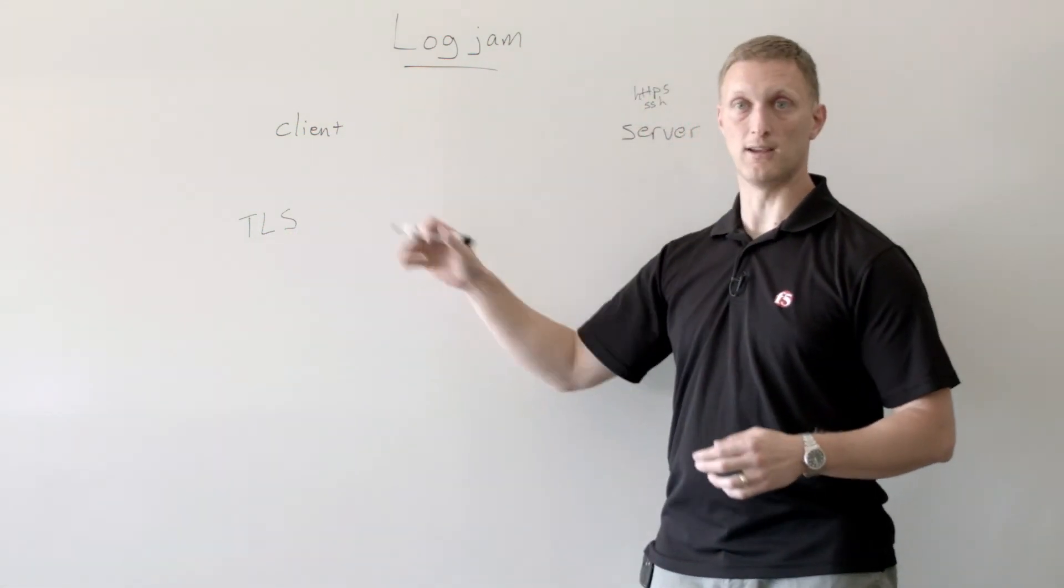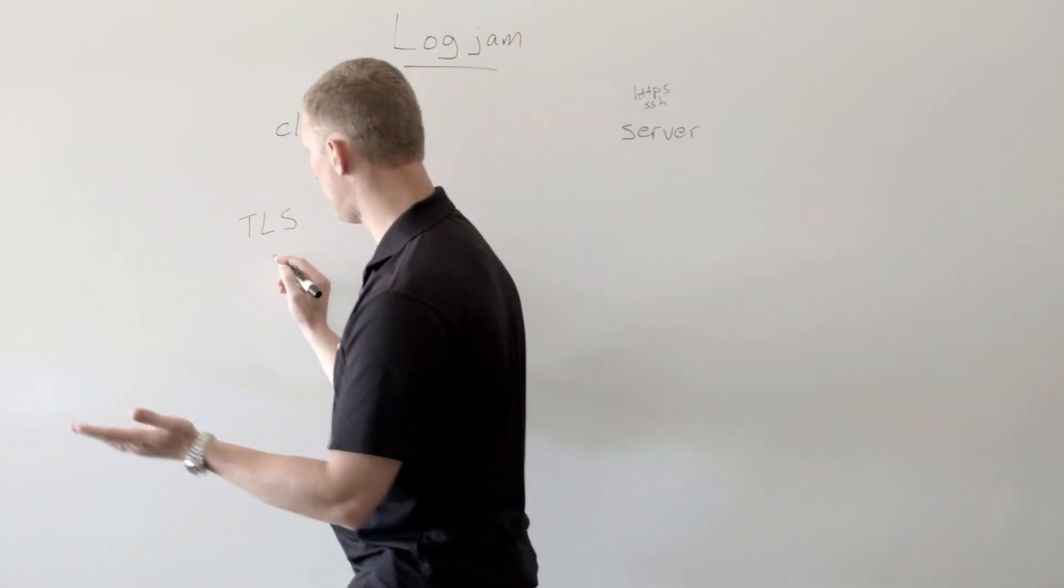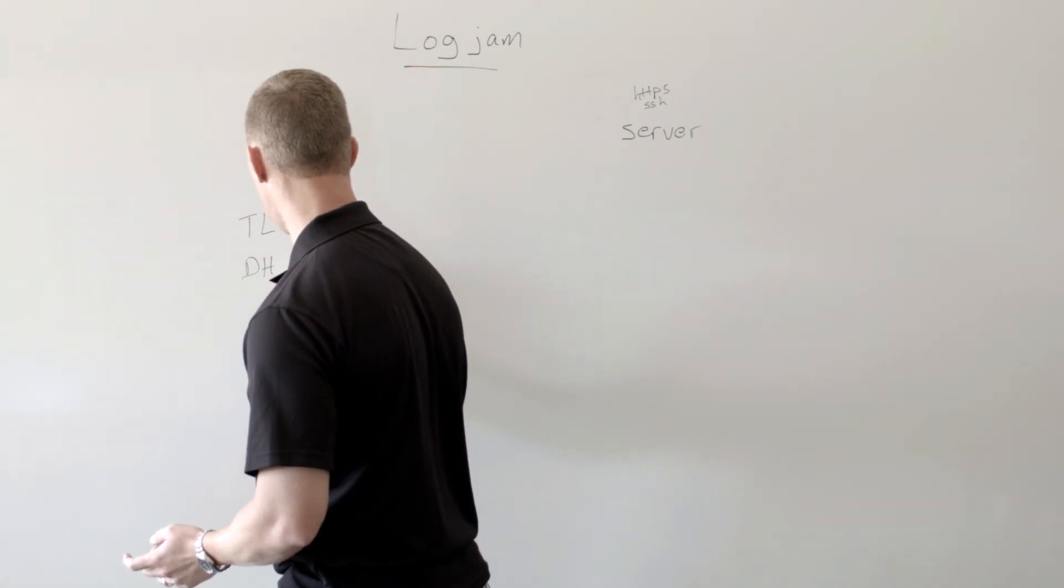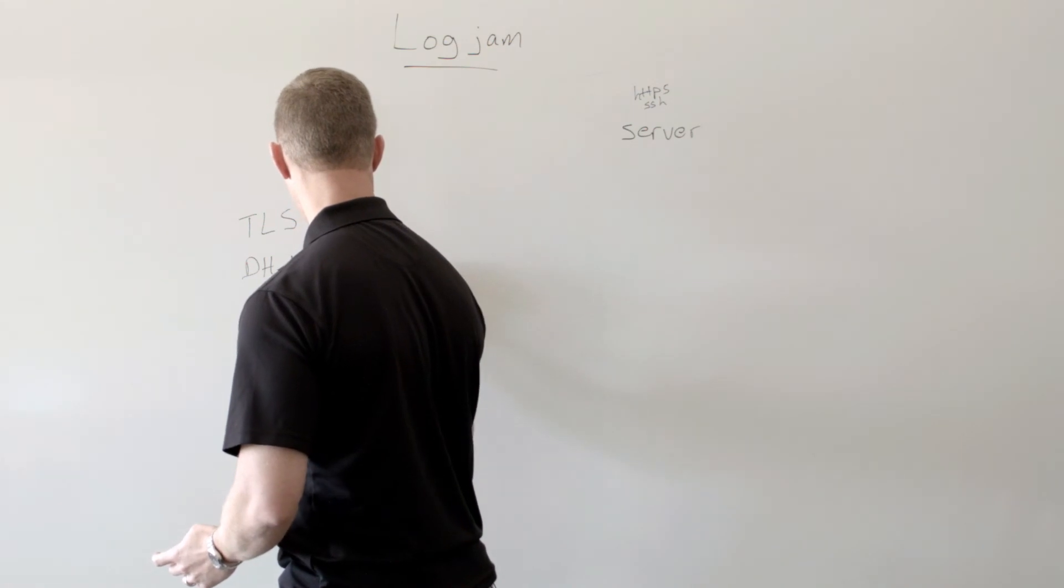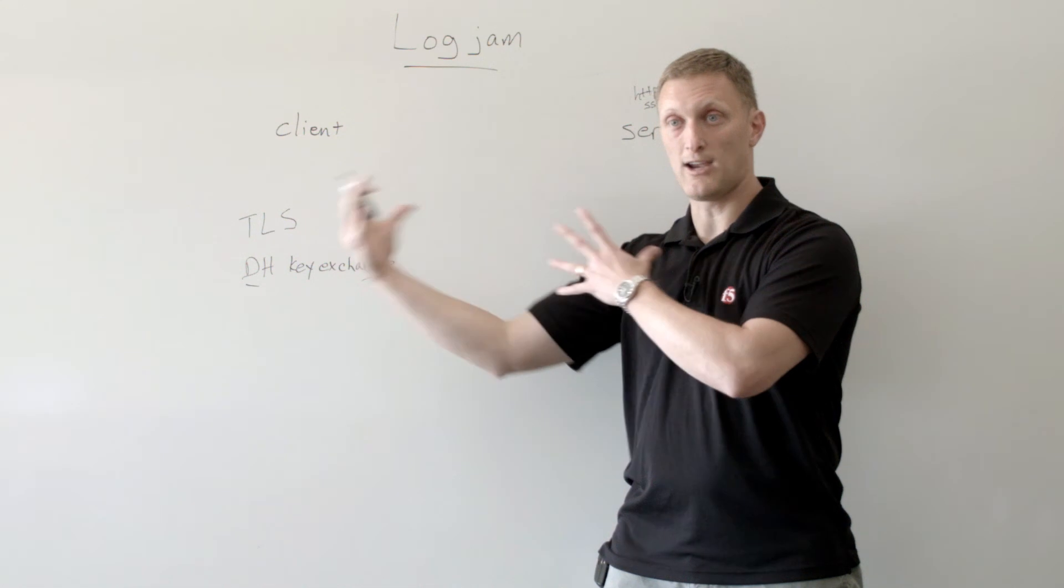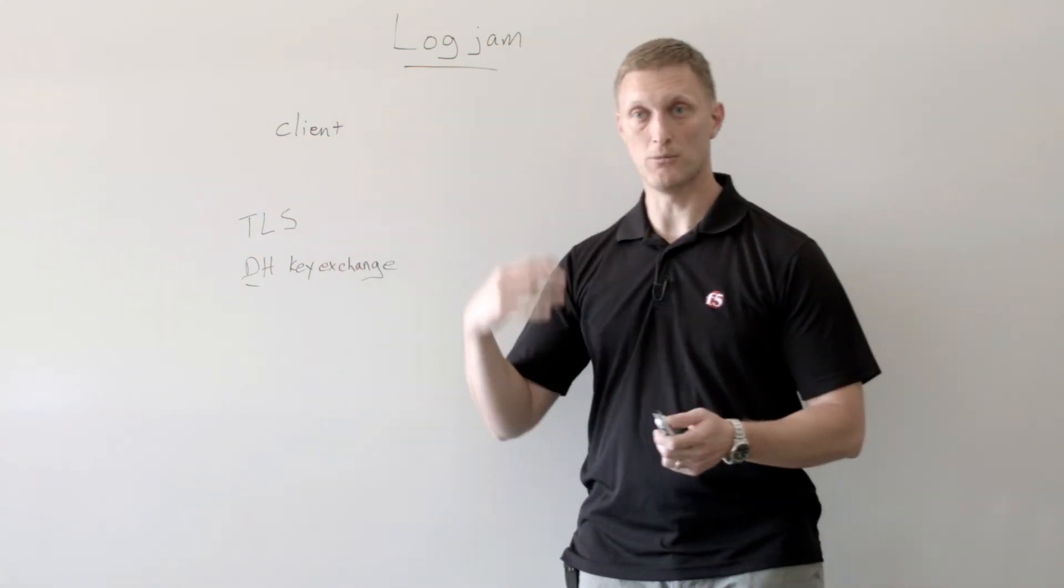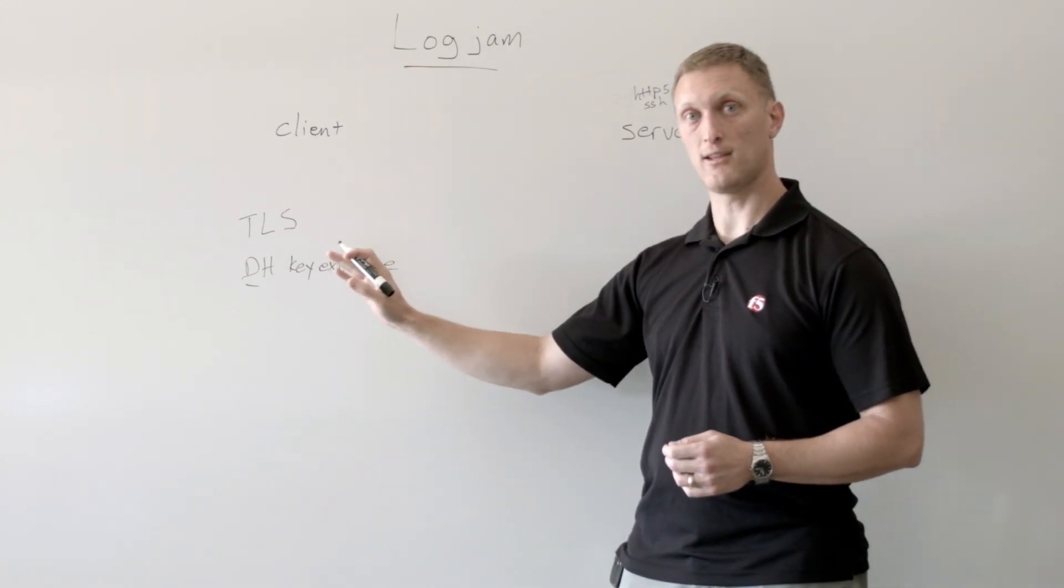Well, as a part of that handshake, one of the initial pieces that happens is what we call the Diffie-Hellman key exchange, and I'll just write Diffie-Hellman key exchange, DH key exchange. And frankly, key exchange happens. Diffie-Hellman is one of the most popular ways to do the key exchange. And that's where Logjam comes in.